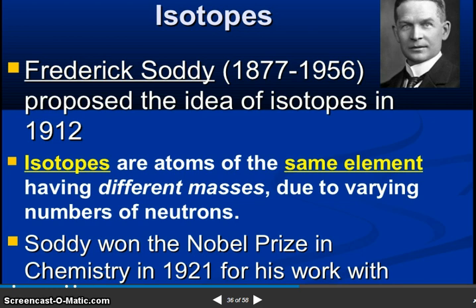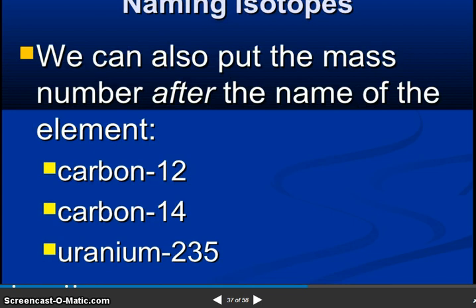So Frederick Soddy proposed the idea of isotopes in 1912. Isotopes are atoms of the same element having different masses due to varying numbers of neutrons. Soddy won the Nobel Prize in chemistry in 1921 for his work with naming isotopes. We can also put the mass number after the name of the element: carbon 12, carbon 14, uranium 235.